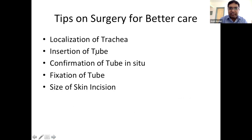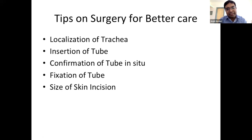For better surgical outcomes: localize the trachea well and make the tracheostomy in the centre — lateral tracheostomies lead to positional tubes and dislodgement. While inserting the tube, position matters: confirm tube placement in the trachea. In a breathing patient, watch for blast of air or use a wisp of cotton; in a ventilated patient, bag-mask and auscultate the chest for bilateral air entry, or use ETCO2 monitoring, which is almost confirmatory of correct tube placement.